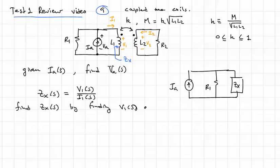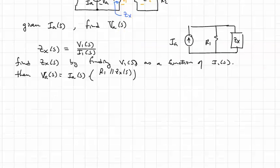So let's find Zx by finding V1 of S as a function of I1 of S. Then VA of S is simply going to be equal to Ia of S times the net impedance of R1 in parallel with Zx. And we can figure that out as a last step.